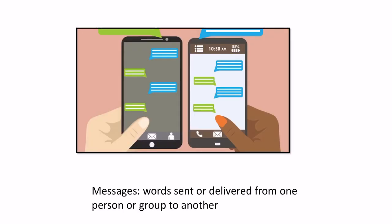Our next vocabulary word is messages, words that are sent or delivered from one person or a group to another. So the photograph shows something that you're very familiar with, two people sending messages to one another through their telephones. But a message is something that can also be sent on paper. Like sometimes in class, I see some of you sending little notes to each other. Those are messages that you are sending.